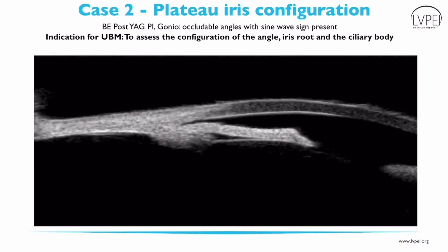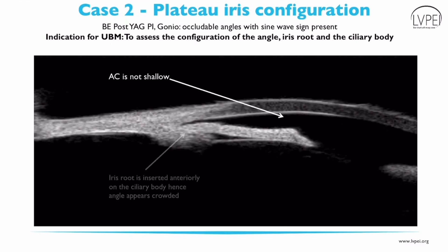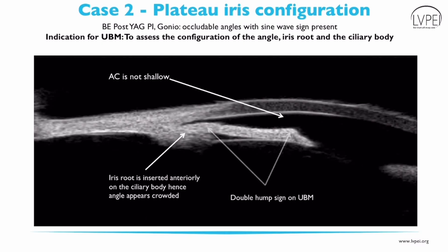This is a 42-year-old female who had intraocular pressure of 22 mmHg post-peripheral iridotomy. UBM showed that the anterior chamber is not shallow and the iris root is inserted anteriorly on the ciliary body, hence angles seem to be crowded. It also showed a double hump sign of iris, hence confirming the diagnosis of plateau iris configuration.